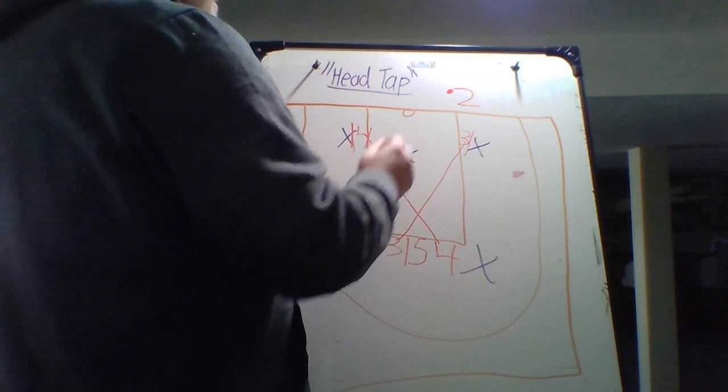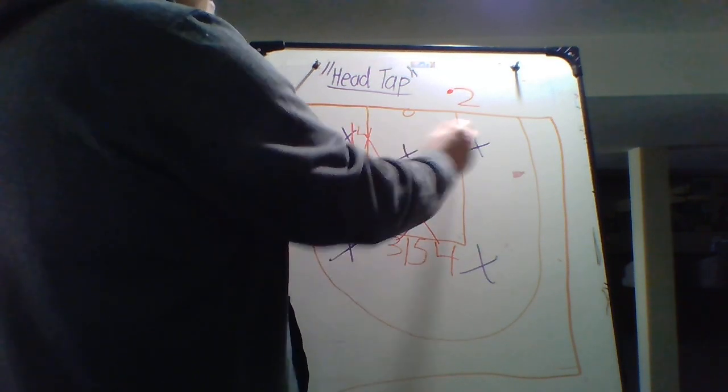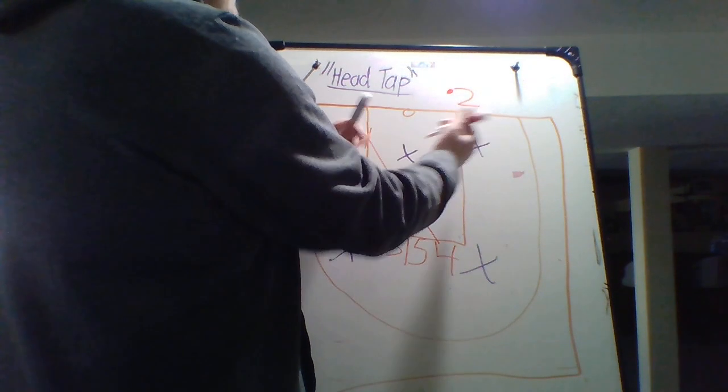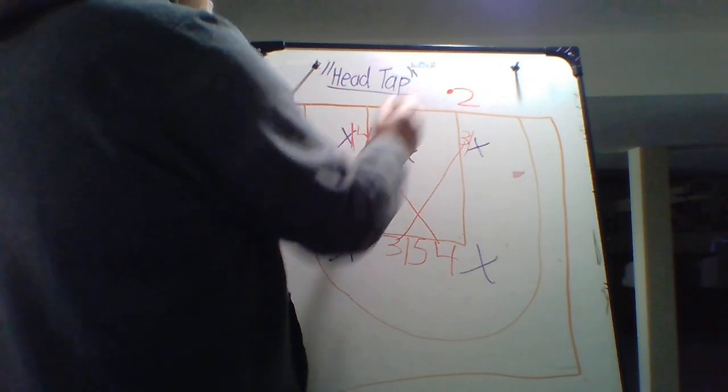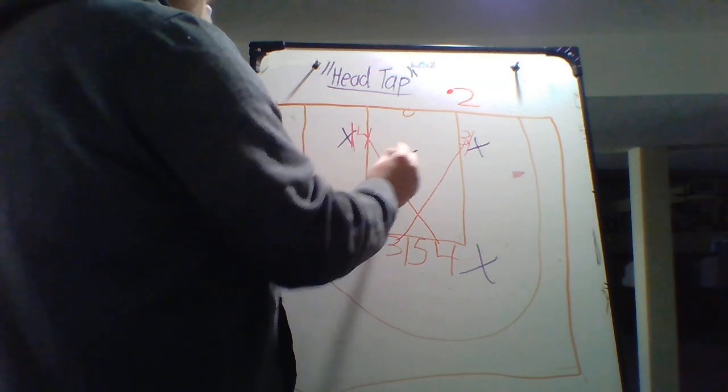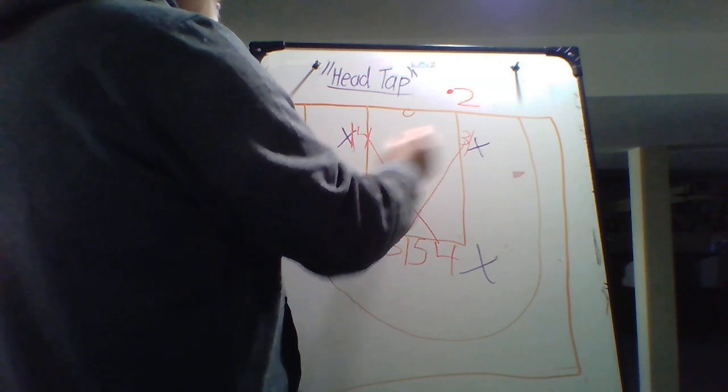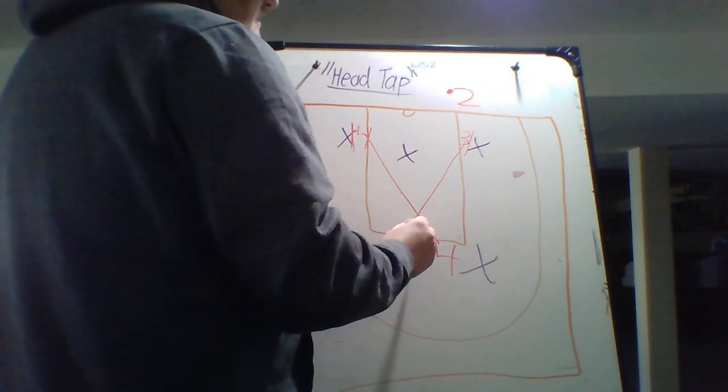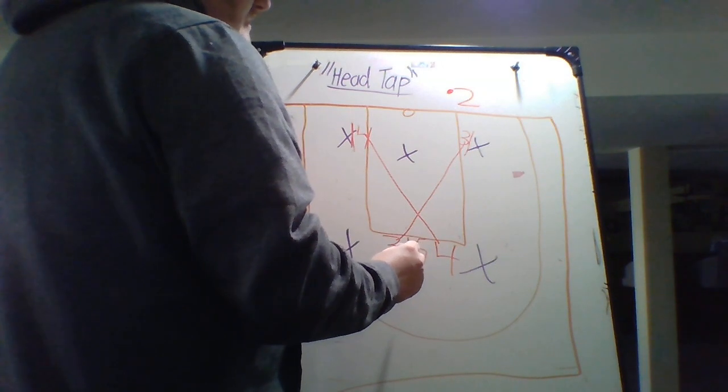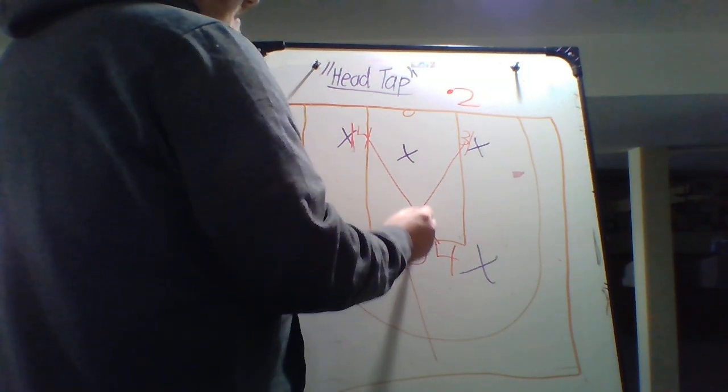And that makes this person in the middle have to worry about either of these two people because if they're on the inside, the two can easily pass to the three or to the four for an open layup. So this big person in the middle is going to be watching both players and might get lost for a split second. That's exactly what we want. Because then the last two movements are the one pops out to be the safety at the top of the key and the five attacks the middle.